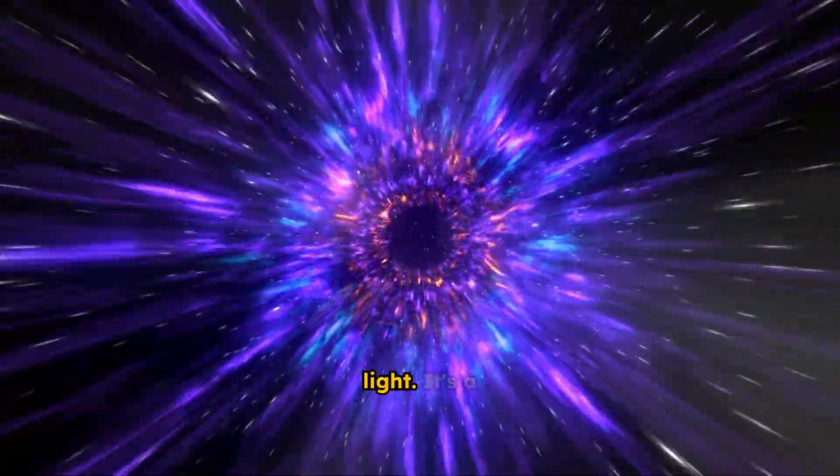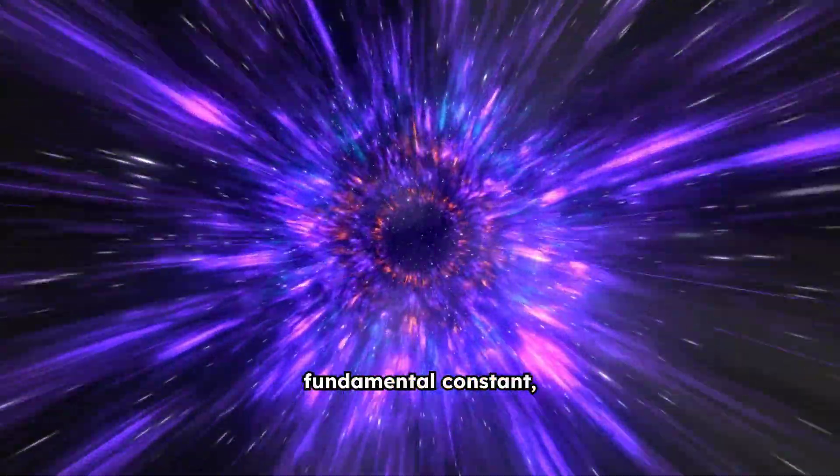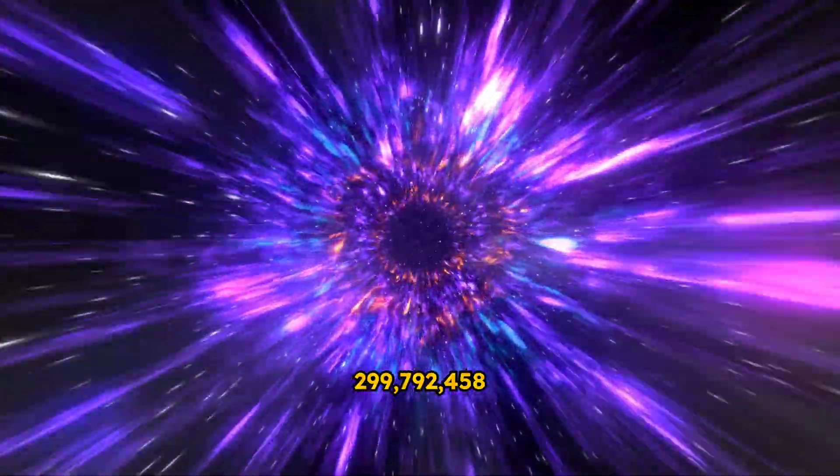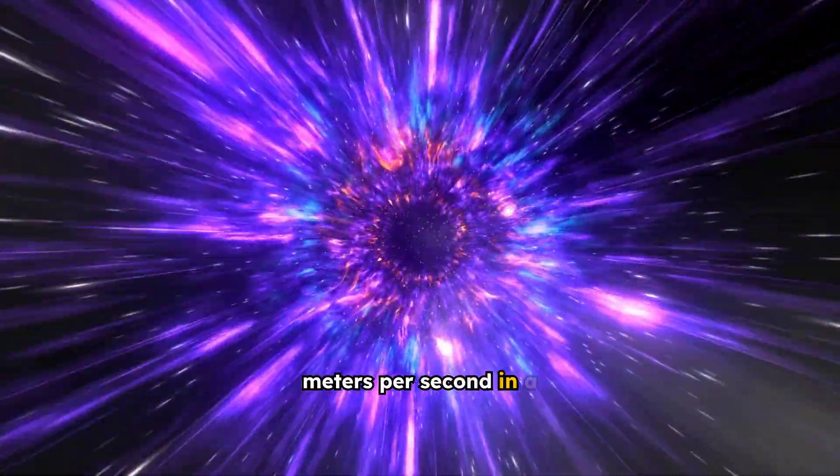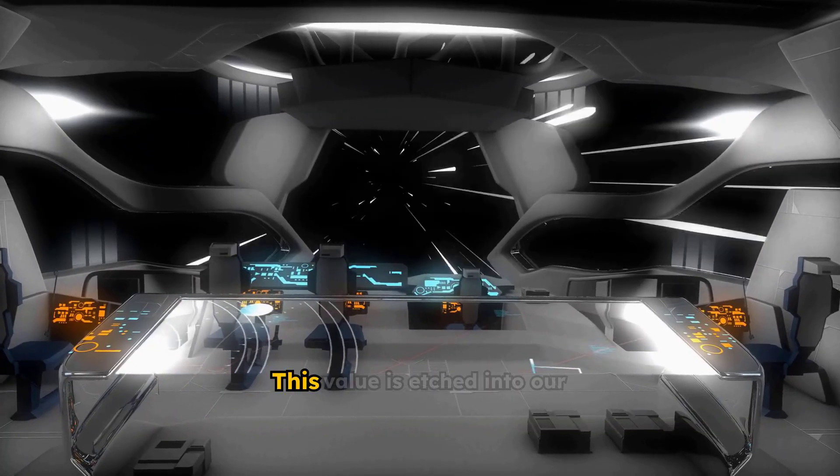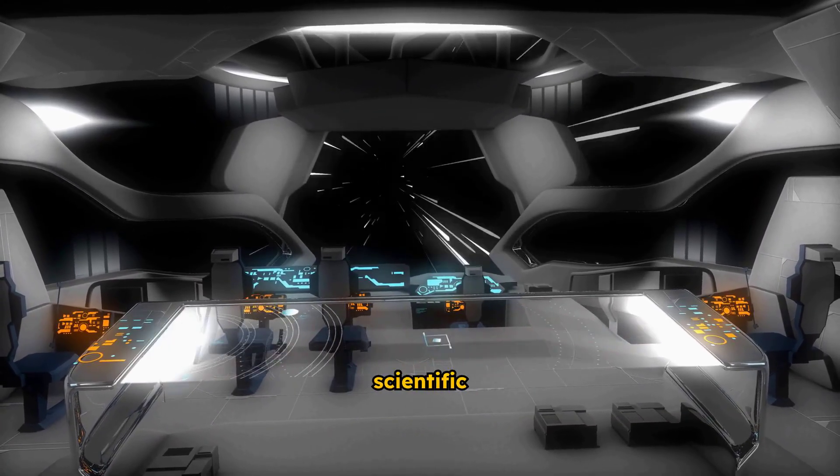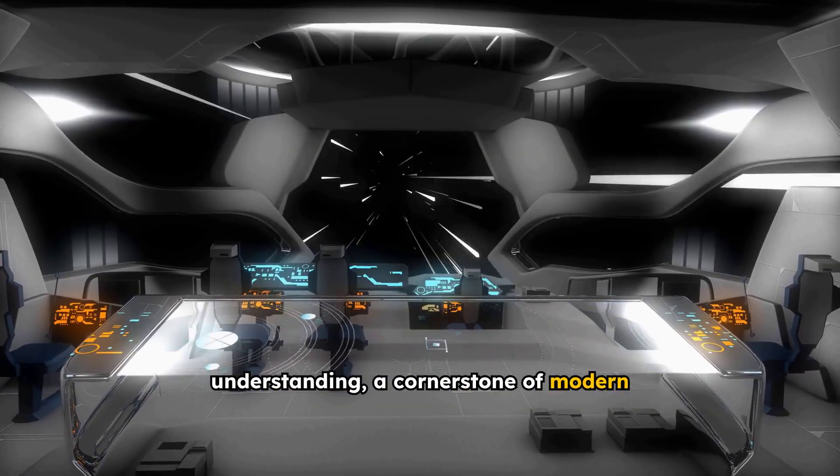We all know the speed of light. It's a fundamental constant, precisely 299,792,458 meters per second in a vacuum. This value is etched into our scientific understanding, a cornerstone of modern physics.